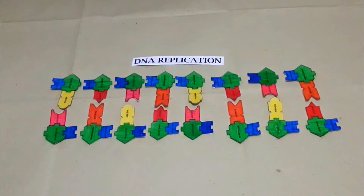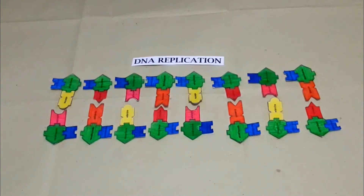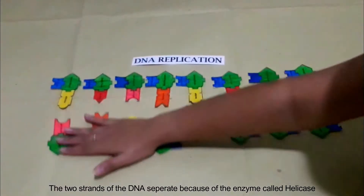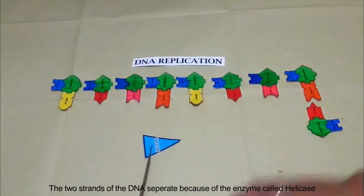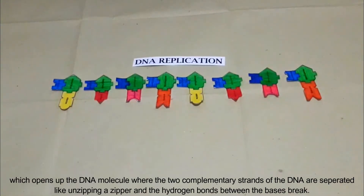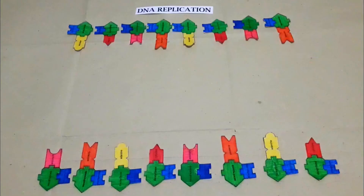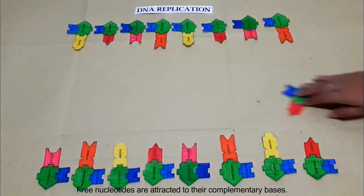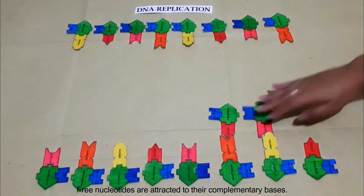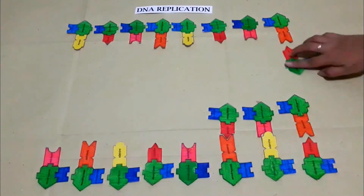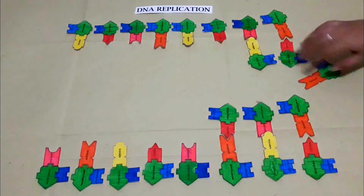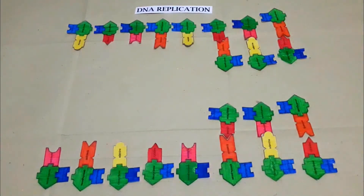Here is how replication works. First, a representative portion of DNA is about to undergo replication. Second, the two strands of the DNA separate because of the enzyme called helicase, which opens up the DNA molecule. The two complementary strands of the DNA are separated like unzipping, and the hydrogen bonds between the bases break.